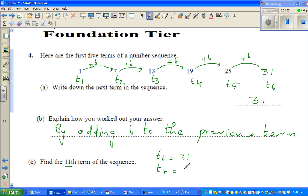So T7 would be plus 6, which is 37. T8 is plus 6, which is 43. T9 would be, again, plus 6, which is 49. Can you see a pattern there? So T10 would be plus 6, which is 55.